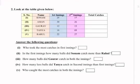Now we will write the total catches — we will add the first inning and the second inning. Sonam: 25 plus 17 equals 42. Now we will calculate the total number of catches for each player.